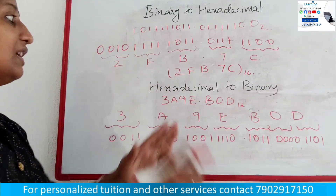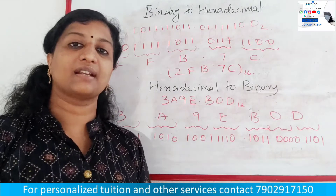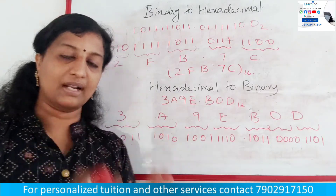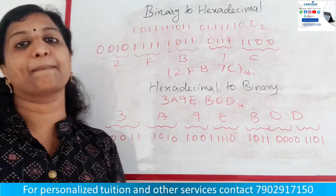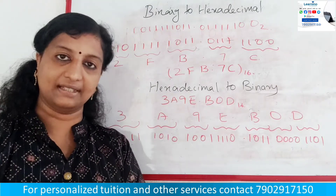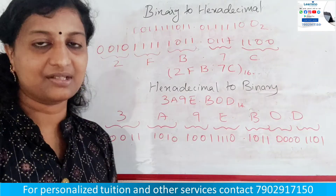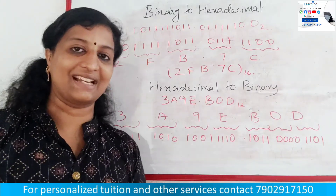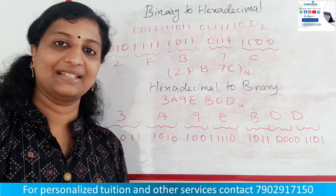Binary to hexadecimal and hexadecimal to binary conversions are very simple — they correspond to each group of 4 bits. This concludes the lecture. Please subscribe to our channel. Thank you.